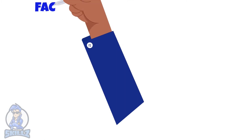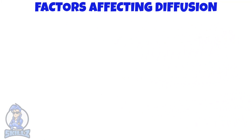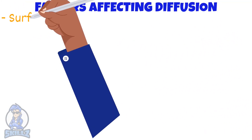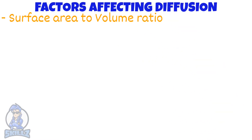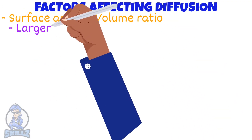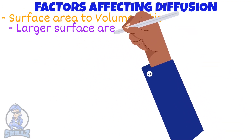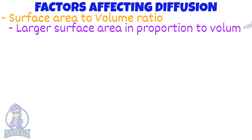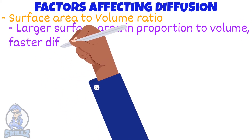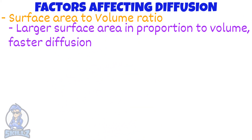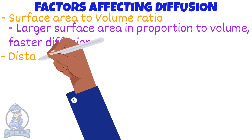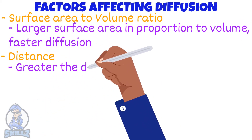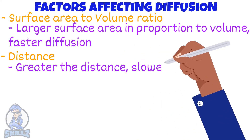We will look at factors affecting diffusion. First, we have surface area to volume ratio — a larger surface area in proportion to volume will increase the rate of diffusion. Next is distance: the greater the distance, the slower the rate of diffusion.